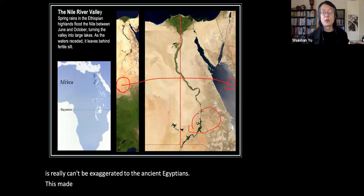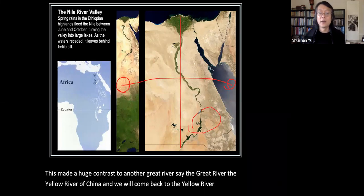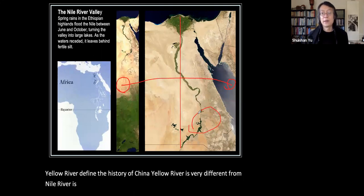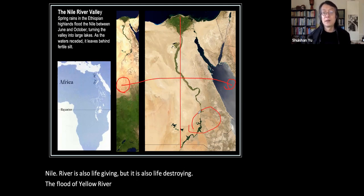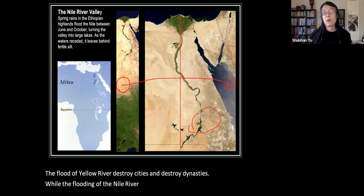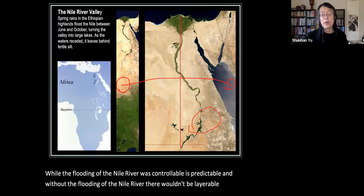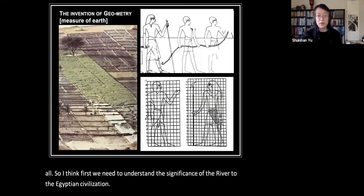This contrasts greatly with China's Yellow River. We will return to the Yellow River to see how it defined Chinese history — it is very different from the Nile. The Yellow River is life-giving but also life-destroying; its floods destroyed cities and dynasties, while the Nile's flooding was controllable and predictable. Without the Nile's flooding there would be no arable land at all, so we must first understand the significance of the river to Egyptian civilization before looking at their architecture.